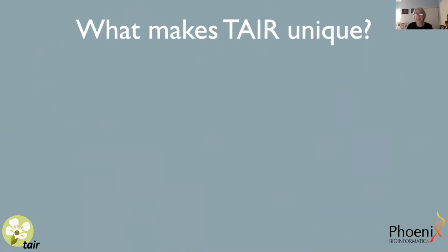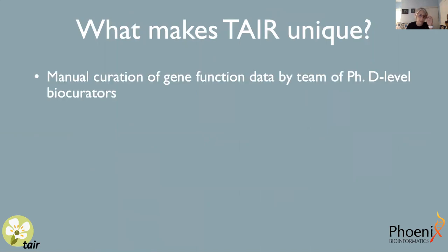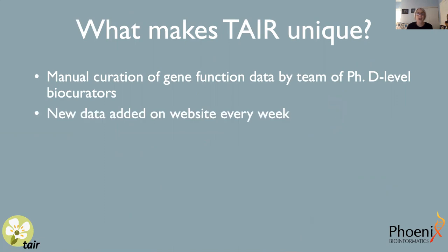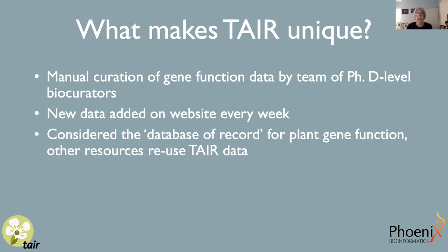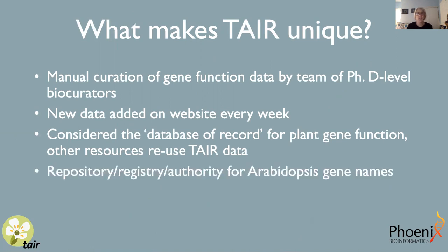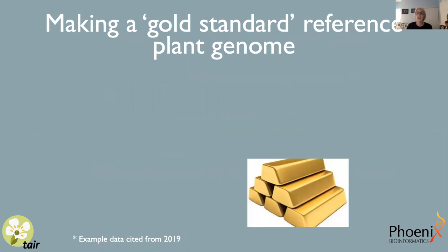What is it about TAIR that makes us unique? The key thing is the manual curation of gene function data done by a team of PhD-level biocurators. We're adding new data to our website every week. We're considered by many to be the database of record for plant gene function, and other resources heavily reuse TAIR data. We are also the repository, registry, and authority for Arabidopsis gene nomenclature. The TAIR database includes some data sets not found in other resources. The goal of this curation is to create a gold standard annotated reference genome for this important model plant.